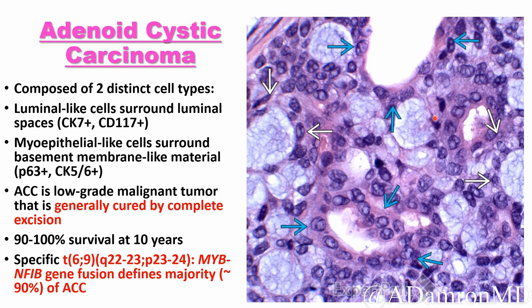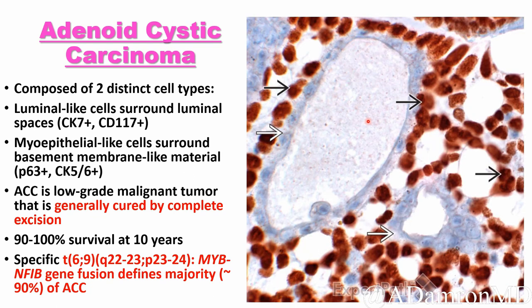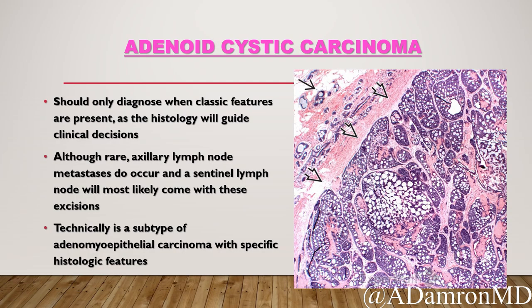Ninety percent of adenoid cystic carcinomas are associated with a very distinct translocation: the MYB-NFIB gene fusion at t(6;9). Keep in mind ten percent may not have that gene fusion, and more importantly, in higher-grade lesions that fusion may not be there - making the distinction between high-grade adenoid cystic and adenomyoepithelial carcinoma that much more difficult when CD117 isn't helping either. The CD117 staining highlights the luminal-like cells, and p63 highlights the myoepithelial-like cells, demonstrating that dual cell population in these tumors.